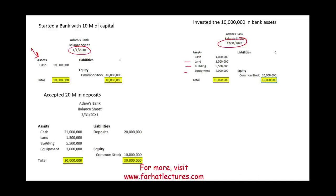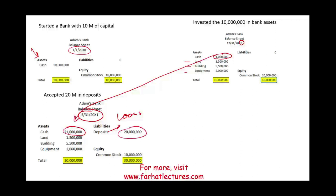We open our doors for business in year X1 and accepted in the first quarter 20 million in deposits. Deposits mean people deposited money at your bank — those deposits are loans to the bank. When you deposit your money, the bank will have more cash but also more liabilities, more debt. So by the first quarter of year one we have 21 million in cash. Deposits are a liability for the bank — the bank has more cash but they have deposits.